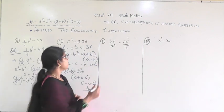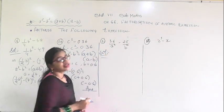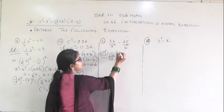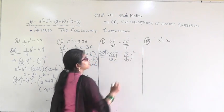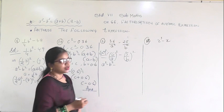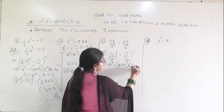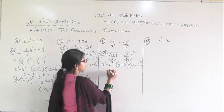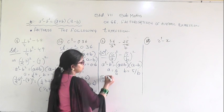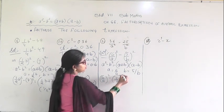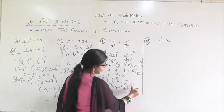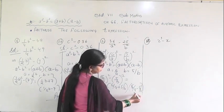In the 11th question, you are given 36/a squared minus 25/b squared. I can write 36/a squared as (6/a) squared, since 6 squared is 36. And 25/b squared is (5/b) squared, since 5 squared is 25. This is in the form of a squared minus b squared, so (a plus b)(a minus b), where a equals 6/a and b equals 5/b. Substituting: (6/a plus 5/b)(6/a minus 5/b). This is the answer.